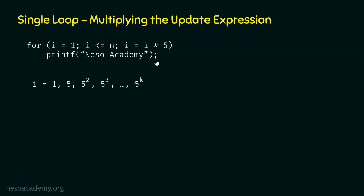Now let's find the value of k in terms of n, because the time complexity should be represented in terms of the input size n. We know the loop runs k plus 1 times, but we need to determine k in terms of n. We know 5 power k is equal to n. To find k, we can apply log on both sides, taking the base of log as 5.